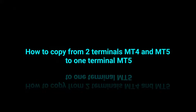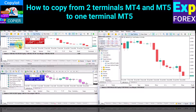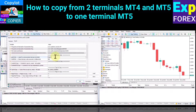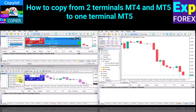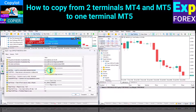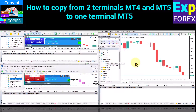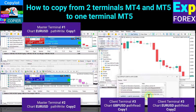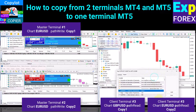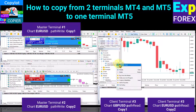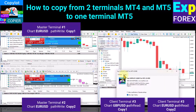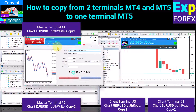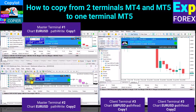To copy positions and orders from two master terminals to one client terminal: on master terminal 1, load CopyLot Master and configure the path write parameter to 'copy1'. On master terminal 2, load CopyLot Master and configure the path write parameter to 'copy2'. On client terminal 3, open two charts and load CopyLot Client on the first chart configured with path write parameter 'copy1'. If everything is configured correctly, our copiers will not interfere with each other — each terminal with CopyLot Master will be associated with its own CopyLot Client instance. You can read detailed instructions on our website.